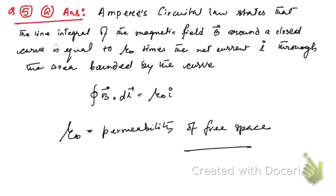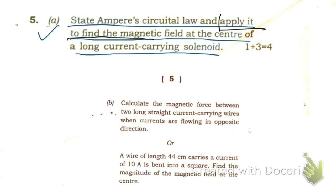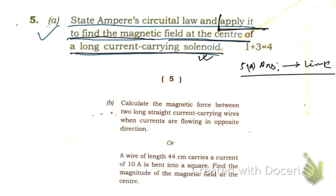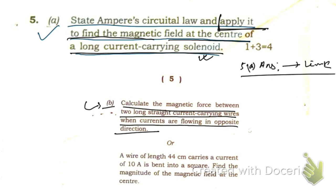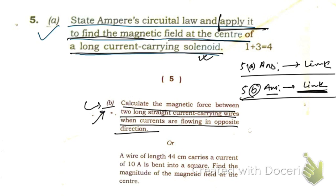That's the statement. Now, for the next part — applying it to find the magnetic field at the center of a long solenoid — I have already made a video on this topic. The link is in the description box under question number five answer. Similarly, for question 5b — calculating the magnetic force between two long straight current-carrying wires when currents flow in opposite directions — I have also made a separate video. The link is in the description box under '5b answer'.